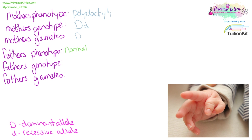The mother's gametes are going to be one dominant and one recessive. The father's phenotype is normal, so because you need one copy of the dominant gene to have this phenotype, his genotype is going to be two recessive genes — that is going to be d and d. Setting out the mother's phenotype, genotype, gametes, and the father's phenotype, genotype, and gametes ensures you get all of the marks and cover everything the examiner could be looking for.